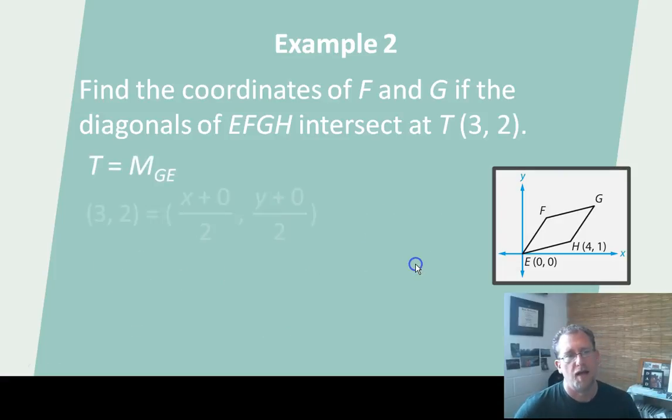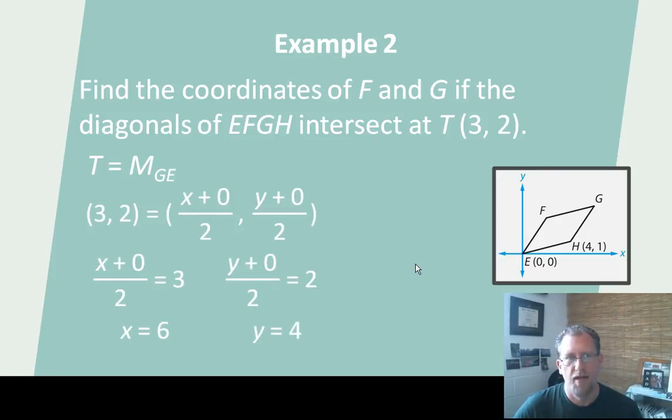I can do the same thing for G. And I can plug in what I know, solve for X, and then solve for Y. And the coordinate of G is 6, 4. So it's the same thing. It's just using the midpoint formula backwards.